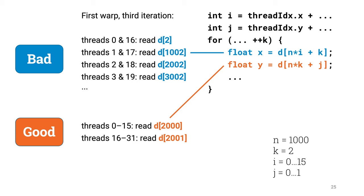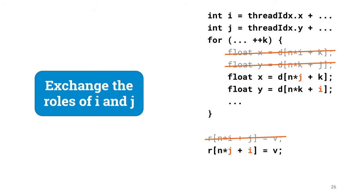So how could we fix this? Let's just do a seemingly small change, and exchange the roles of i and j. So instead of calculating element i, j, we calculate element j, i. A seemingly minor change. Why does this matter? Let's see.